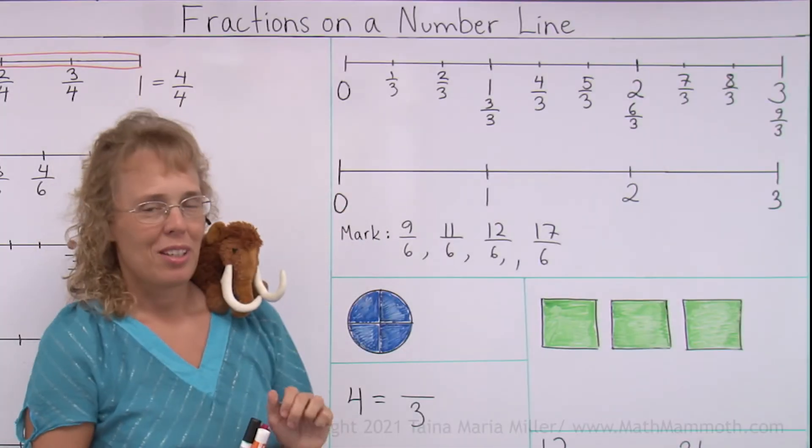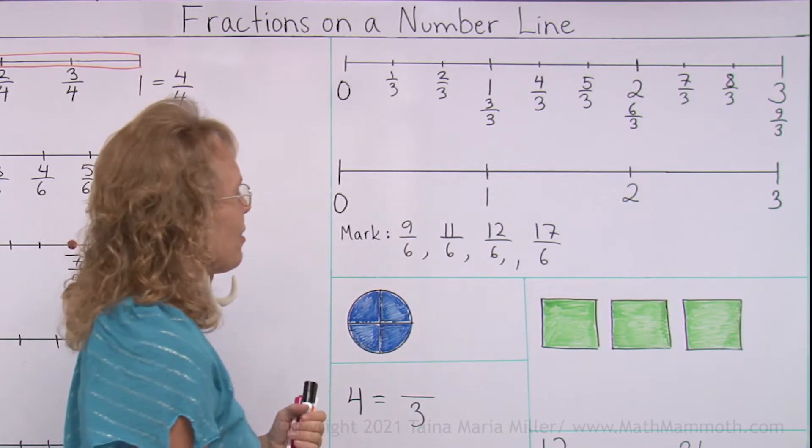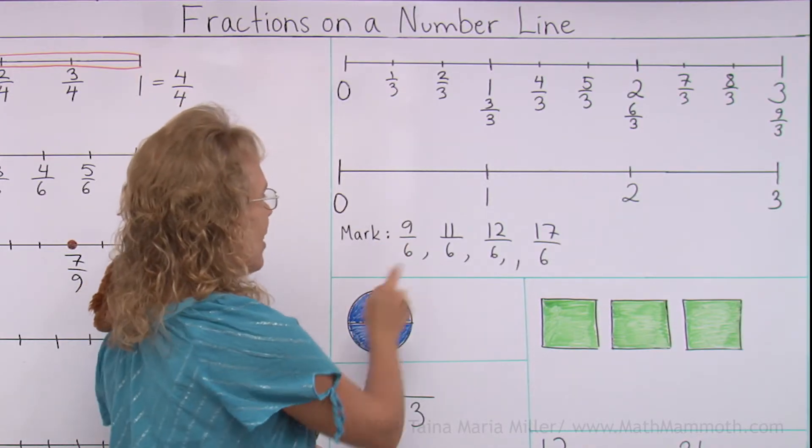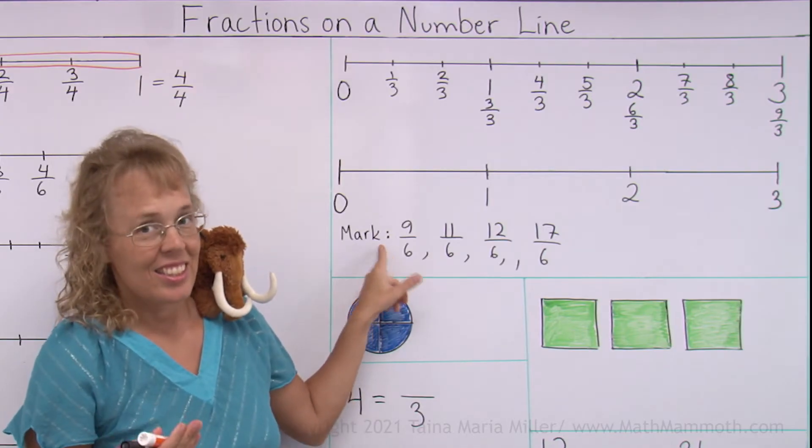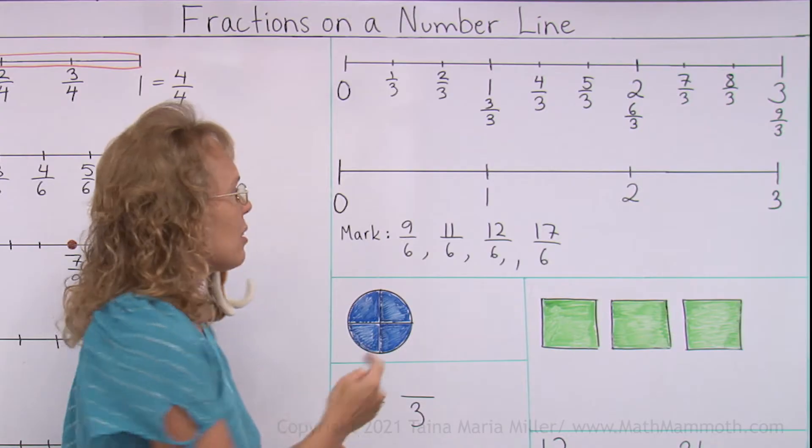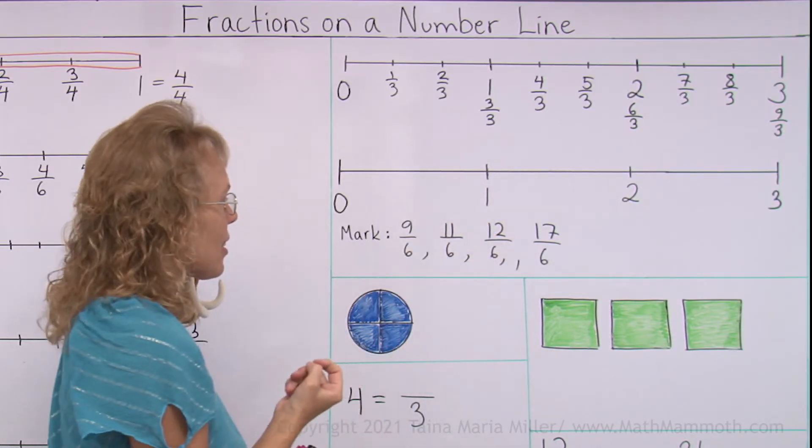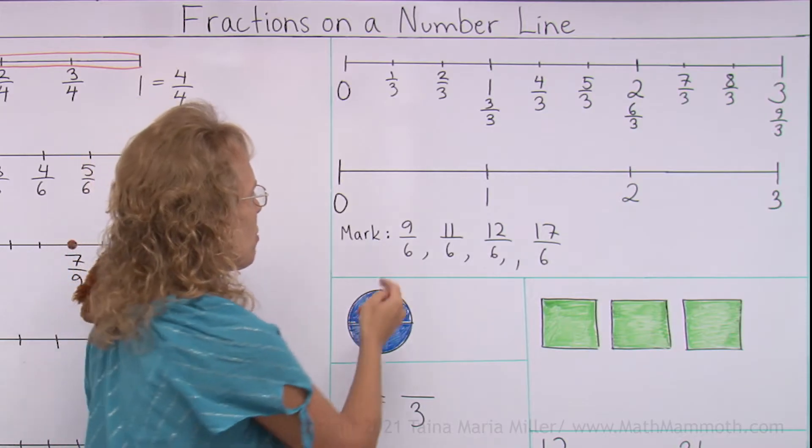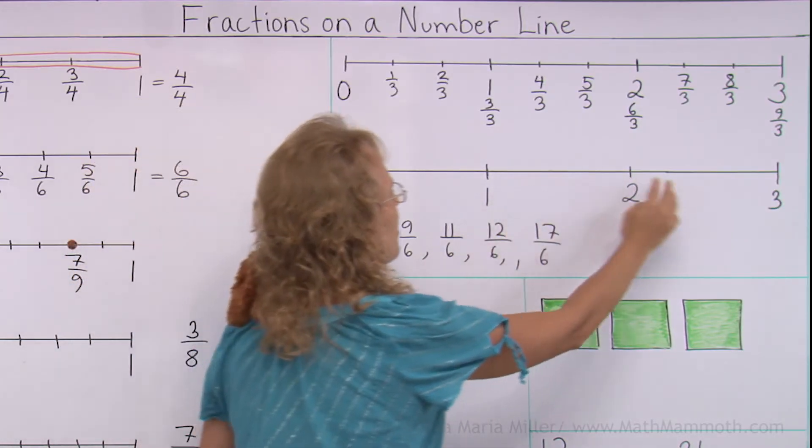On the next number line, our task is to mark these fractions on the number line: 9 sixths, 11 sixths, and so on. Notice, 9 sixths is more than 6 sixths, right? And 6 sixths would be right here. 1 is the same as 6 sixths. So where would 9 sixths and these others be? They are somewhere beyond 1, somewhere here.